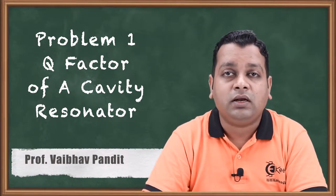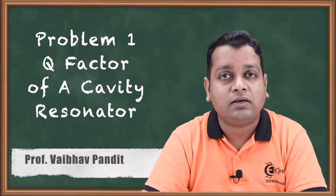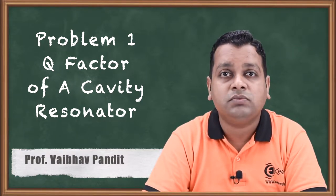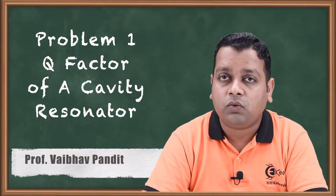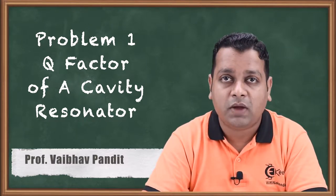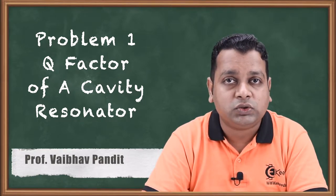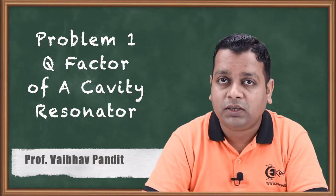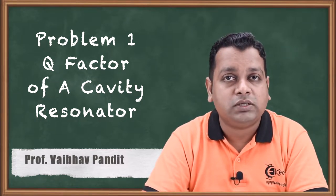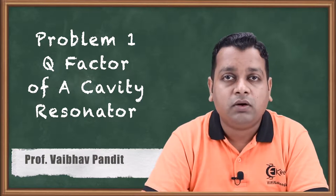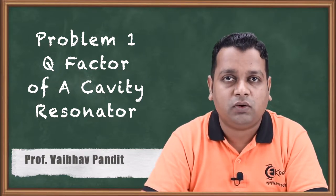So now here we have the rectangular cavity resonator from the rectangular waveguide and the circular cavity resonator from the circular waveguide. In the previous videos, we have gone through the understanding of quality factor — a ratio of how exactly the energy is stored with respect to the cavity resonator, relative to the power dissipation per cycle. So energy dissipation we can call it.